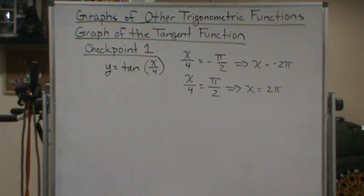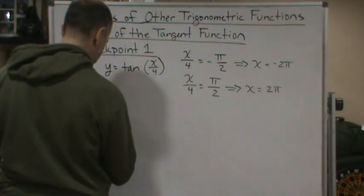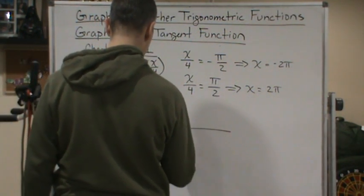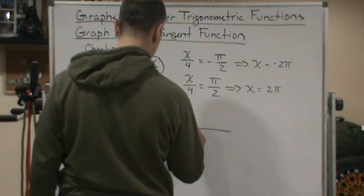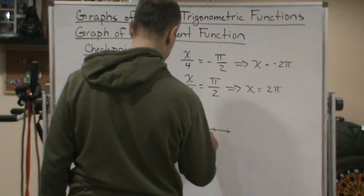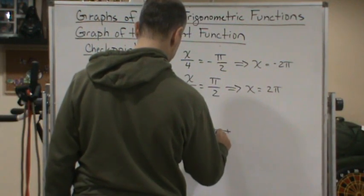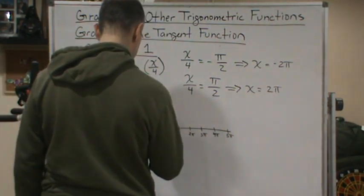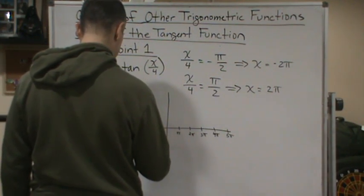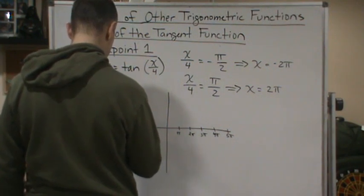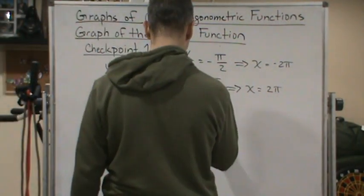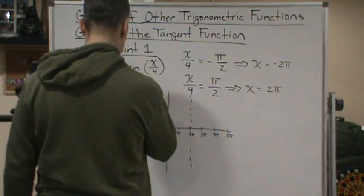Okay, so now we know where our asymptotes are located. So let's draw those. Okay, so I'm going to draw an asymptote here and I got an asymptote here.